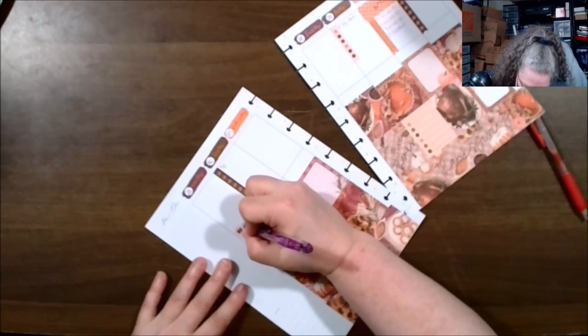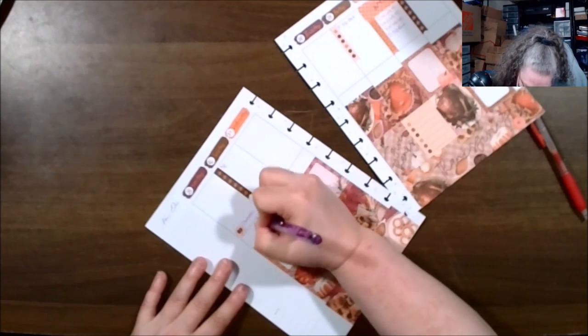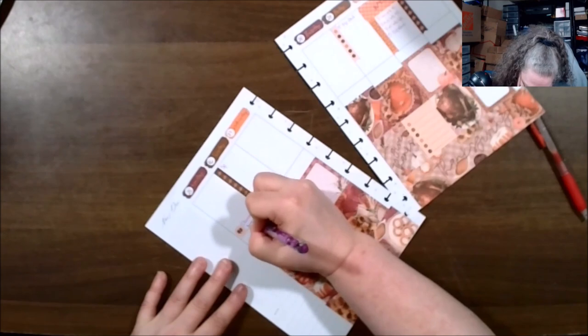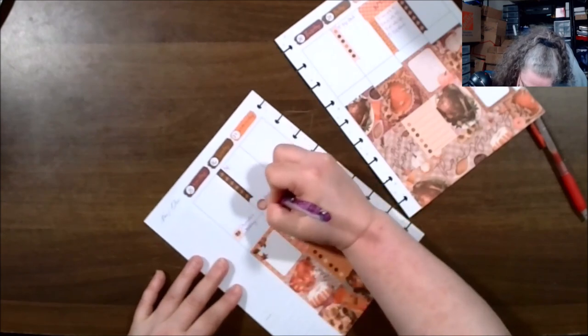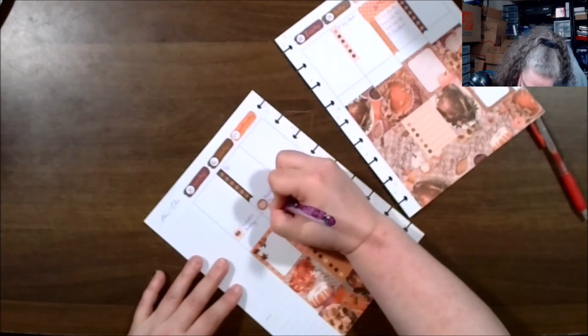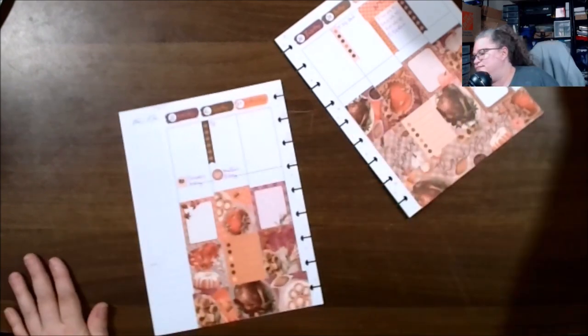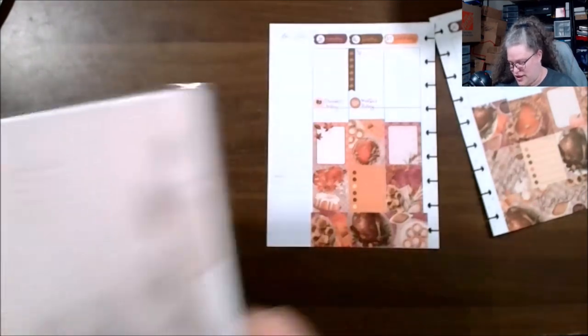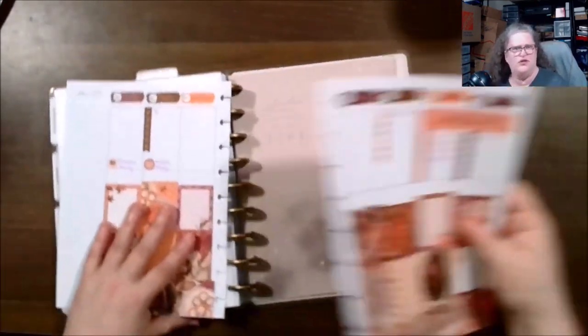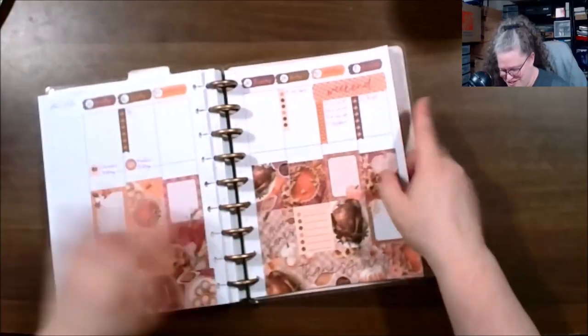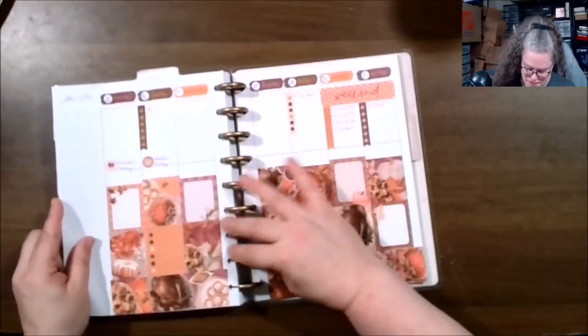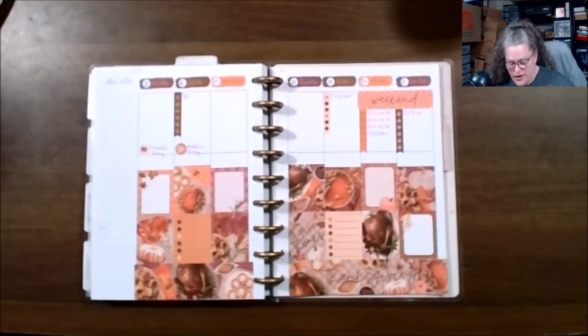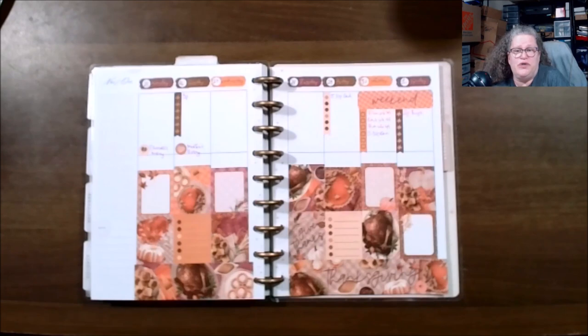All right, so this is Daryl's birthday and this is Martin's birthday. Daryl is a friend's son and Martin I've known for some years, but some years. So here we go. Here is my week 48. Any questions, comments, concerns, please put them down below. Like the video and until next time, I hope everybody is having a wonderful day.